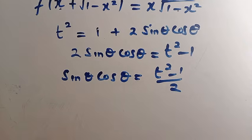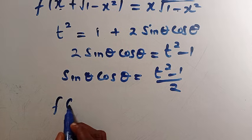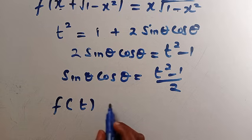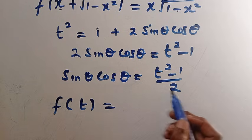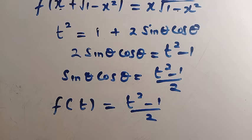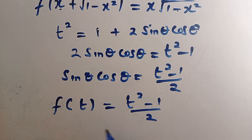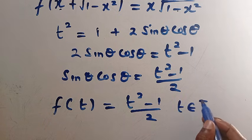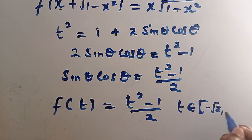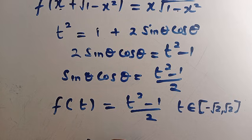Therefore, since f(cos θ + sin θ) = sin θ cos θ and cos θ + sin θ has been replaced by t, we get f(t) = (t² − 1) / 2. The domain of t is the closed interval [−√2, √2] because the absolute value of x from the original function is always less than or equal to 1.